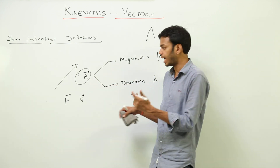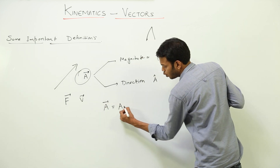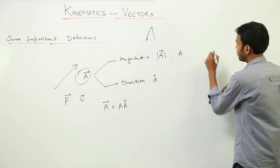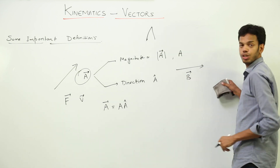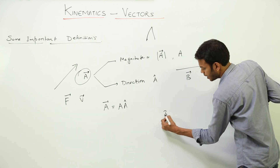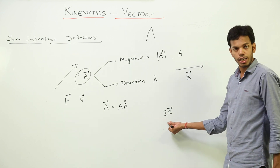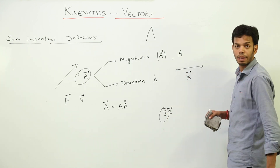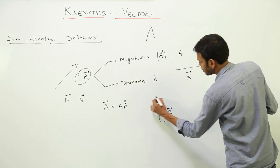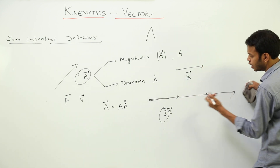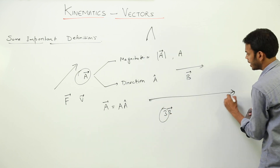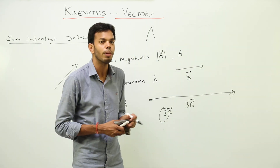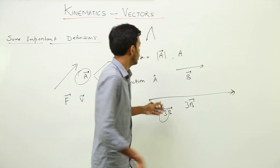A vector is made up of magnitude and direction, so overall a vector equals magnitude times direction. Now, suppose vector B has a certain length. If I want to write vector 3B, I am multiplying a scalar quantity with vector B. The magnitude gets multiplied three times, so you draw the length three times. This is an important point.